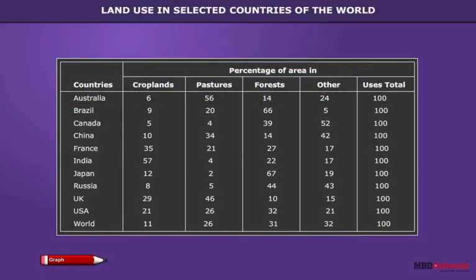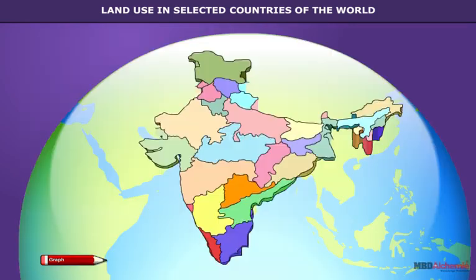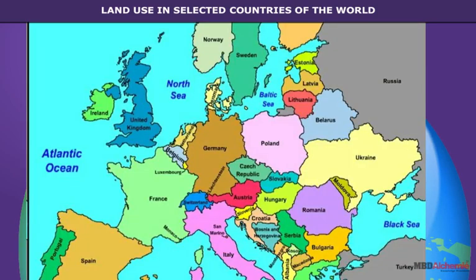Land use in selected countries of the world: According to Table 1, many important inferences can be drawn. India has a very high percentage of arable land at 57 percent. Australia and UK have more land under pasture. A small country like Japan has 67 percent of its total land area under forests. Canada has a good percentage of land under forests but has put its land area to other uses. The land use pattern also reveals probable economic activities — agriculture is the dominant occupation in India, and in France and UK, arable land and agricultural occupations are still very important.